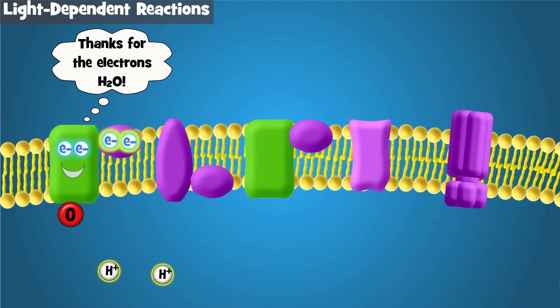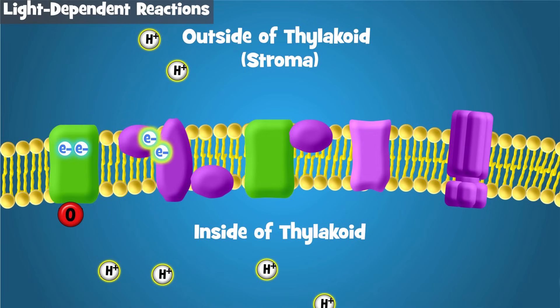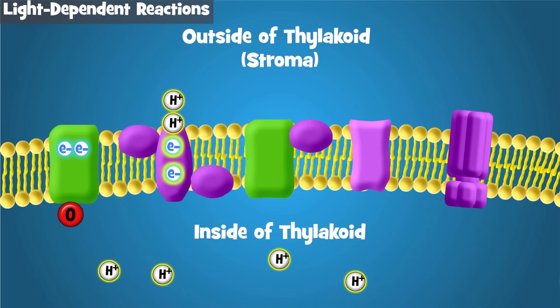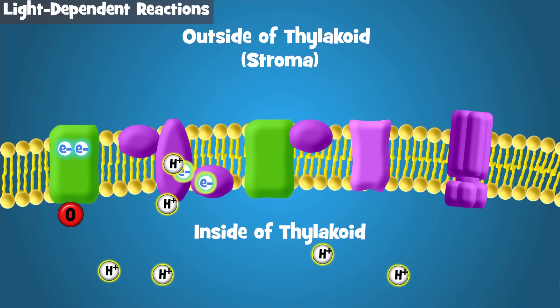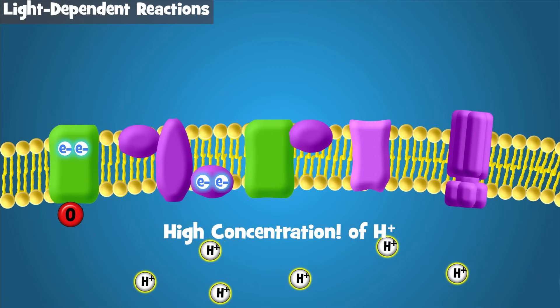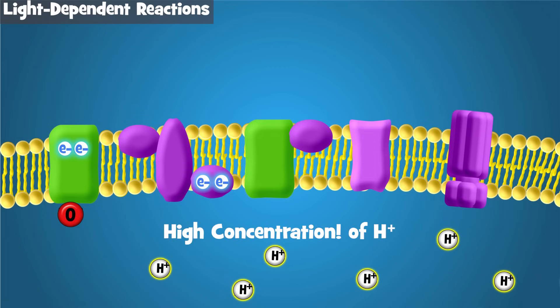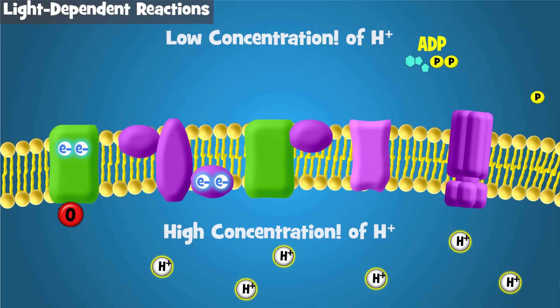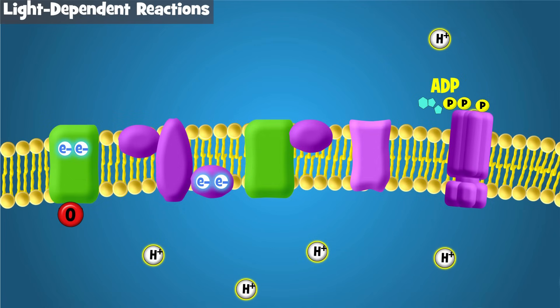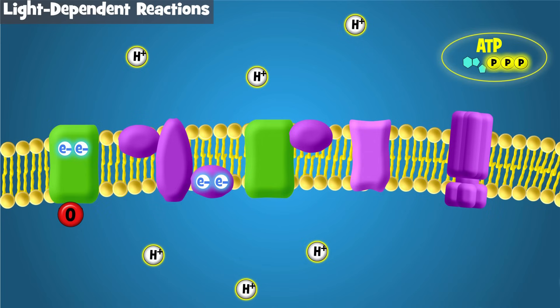Now, back to the electron transport chain. The electron transport chain transports electrons. As it does, the energy in the electrons is used to pump hydrogen ions, or protons, across the thylakoid membrane, into the thylakoid. This creates a high concentration of hydrogen ions inside the thylakoid. A special enzyme called ATP synthase allows them to passively diffuse from high to low concentration. This flow of hydrogen ions through ATP synthase causes ATP synthase to spin and produce ATP, similar to how water flowing through a turbine produces power at a hydroelectric dam. This ATP is a key product of the light-dependent reactions.